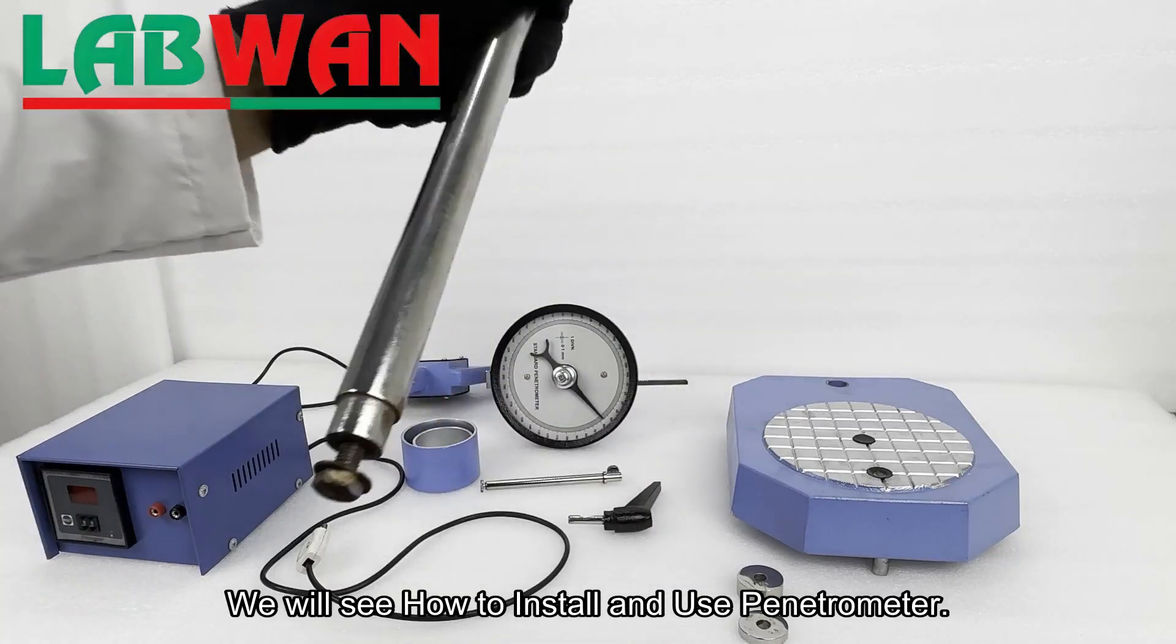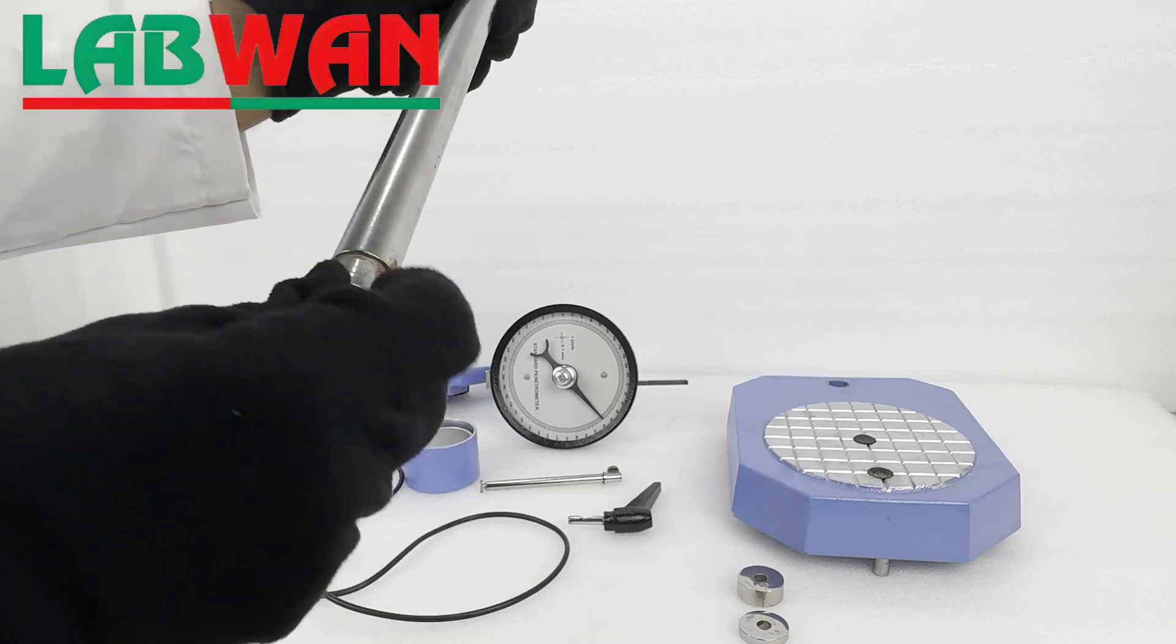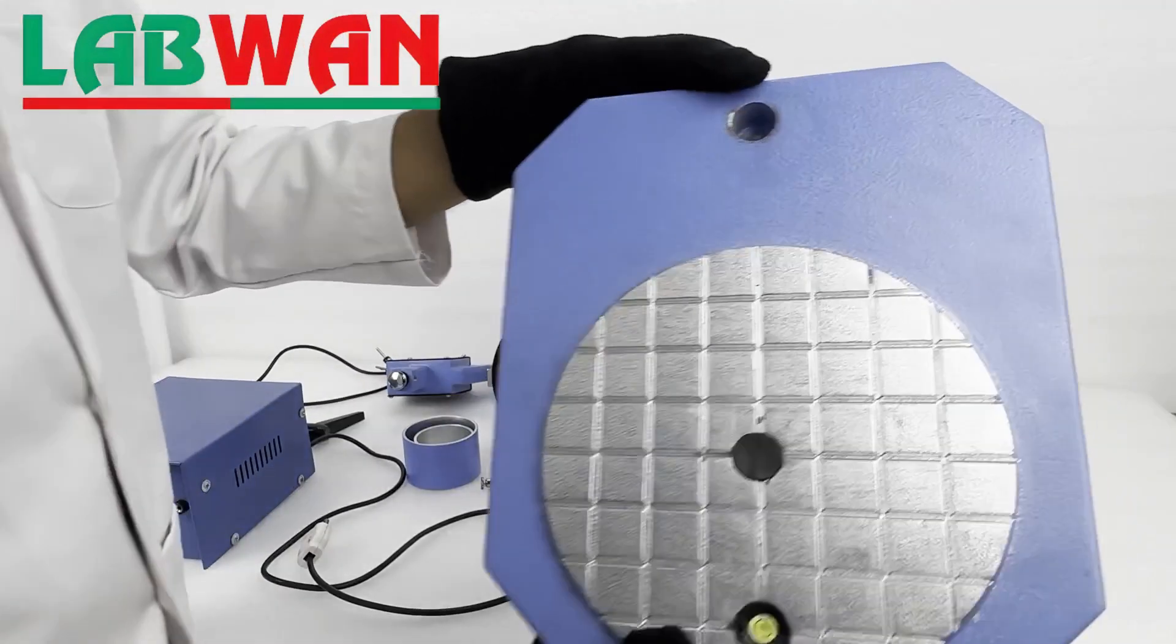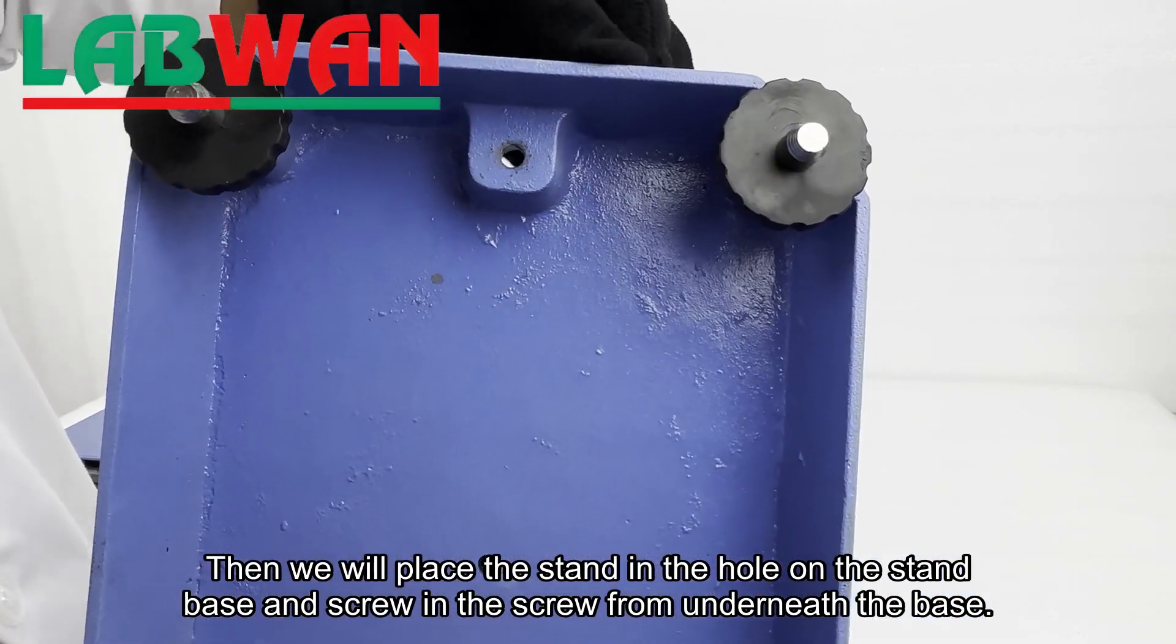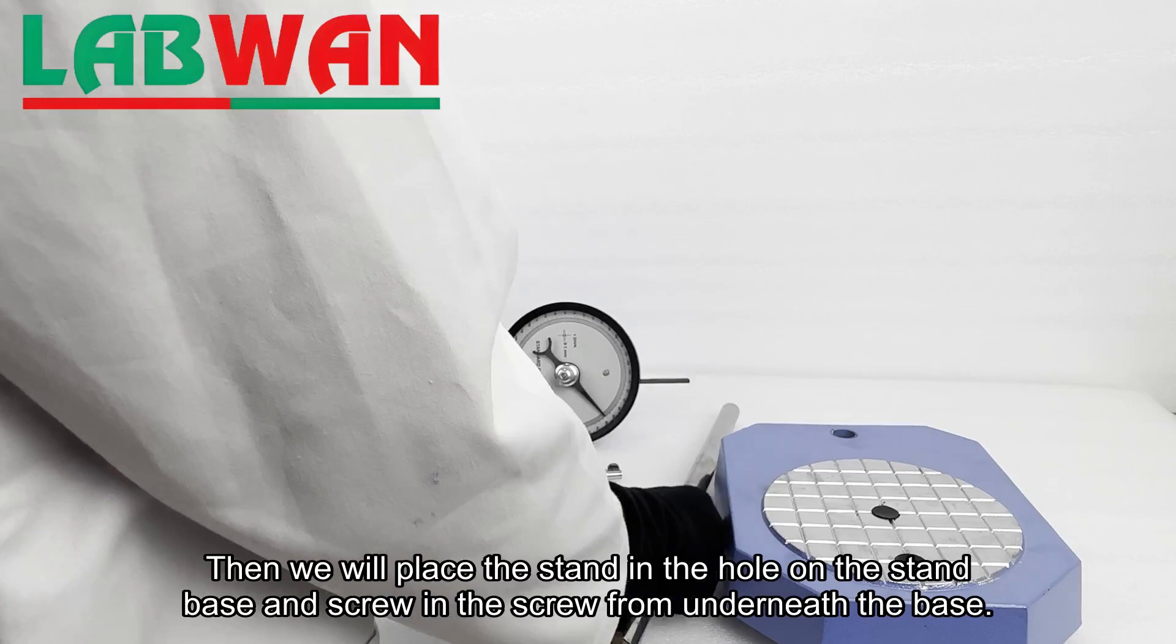We will see how to install and use a penetrometer. First, we will take the screw out of the stand. Then we will place the stand in the hole on the stand base and screw in the screw from underneath the base.